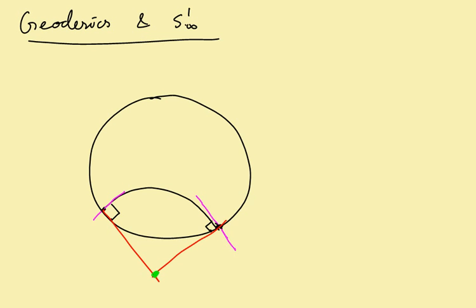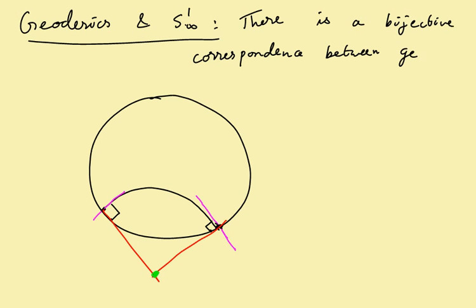Sorry, I could determine a circle corresponding to it. So what this tells you is that there is a bijective correspondence between geodesics and, well, S¹ infinity cross S¹ infinity, well,